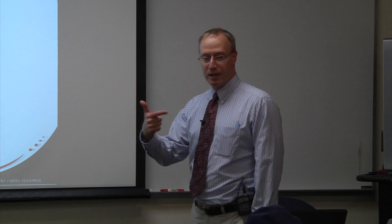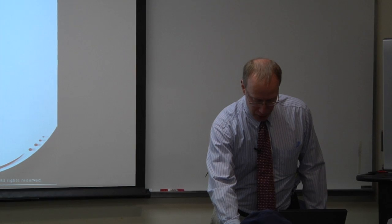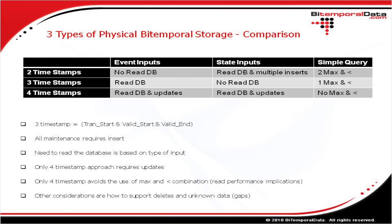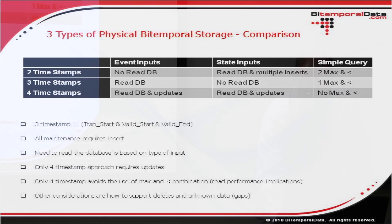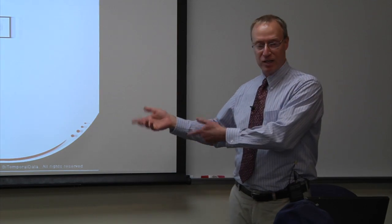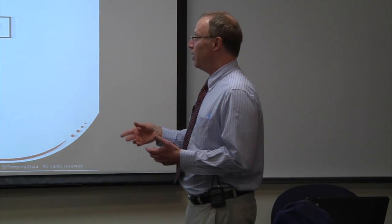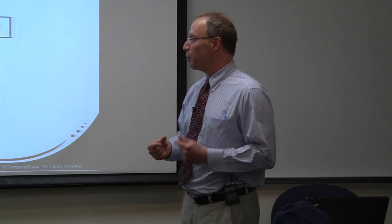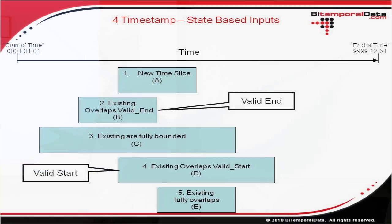Another important cell in that matrix is the four-timestamp approach and how to do maintenance on it. When maintaining bi-temporal data using the four-timestamp approach, whenever you get a new time slice of information, you have to look for four types of existing time slices. This is also how the processing works behind the new ANSI/ISO temporal extensions.